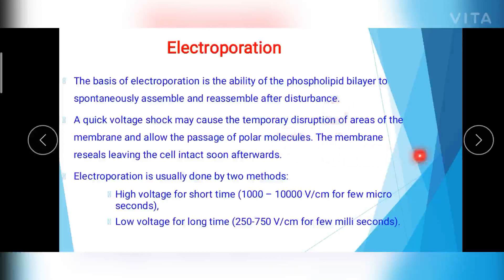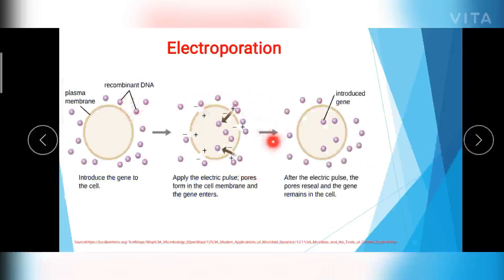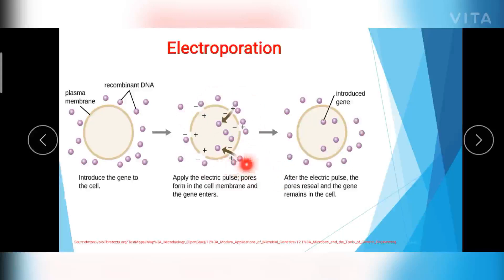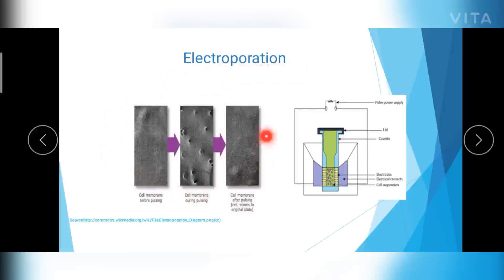Once the electric shock is created, first the pores are formed in the plasma membrane, and when the shock is removed, the plasma membrane reseals again. In the diagram, the yellow colored cells are shown with recombinant DNA molecules outside. Once subjected to electric shock, temporary pores are created in the plasma membrane, and the DNA molecules present outside enter into the cell and integrate into the target cell genome. Once the electric pulse is removed, the plasma membrane reseals. The electron microscope picture shows the plasma membrane before the pulse, during the electric shock with transient pores created, and after the pulse with resealing.